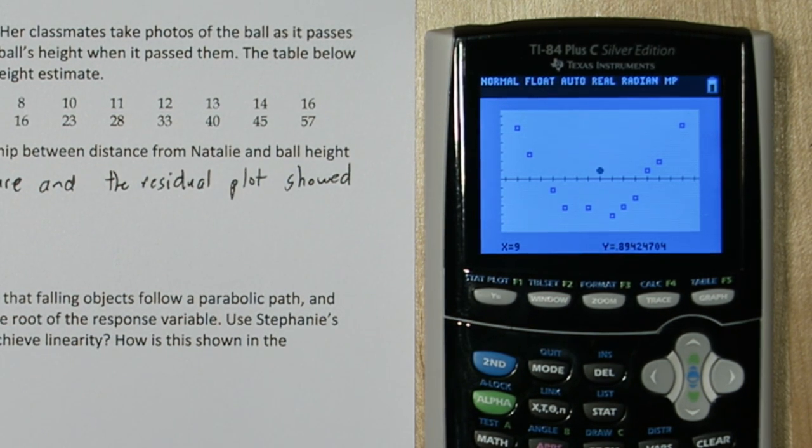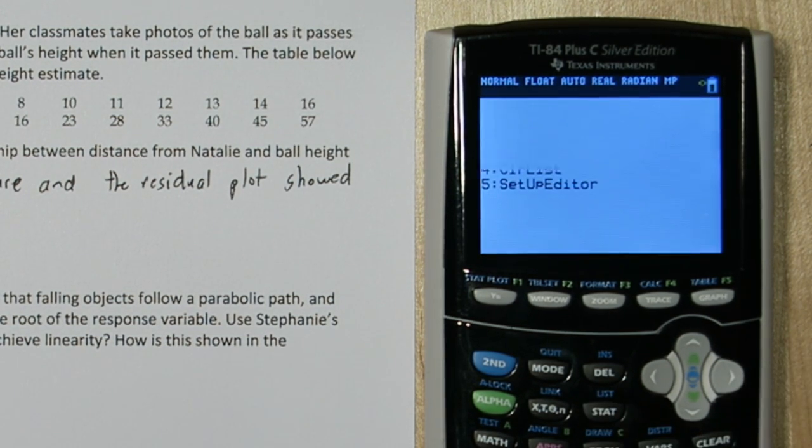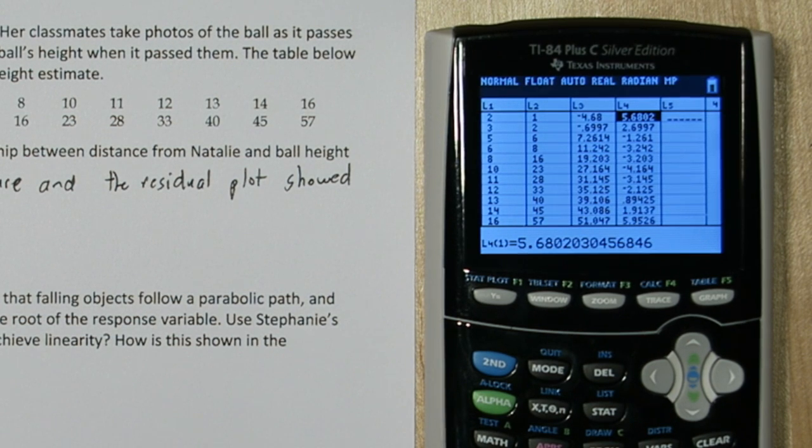In Part B, Stephanie suggests taking the square root of the response variable. So I'm going to press stat and then enter to get back to our lists.